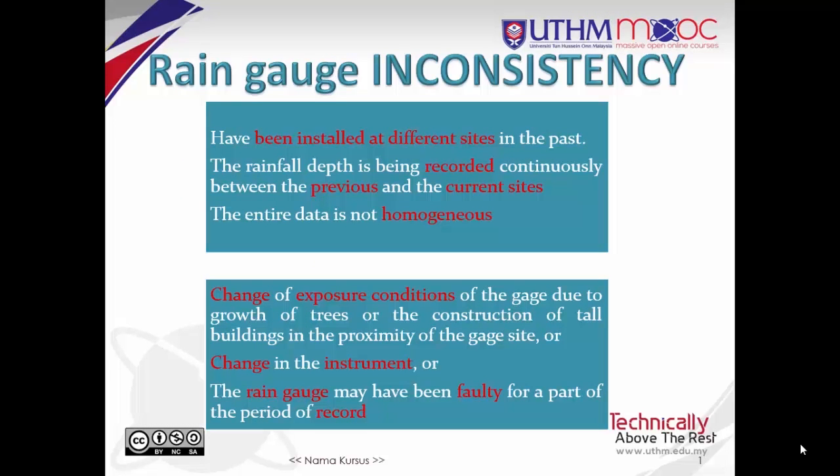Estimating missing data is one problem that hydrologists need to address. A second problem occurs when the catch at rain gauges is inconsistent over a period of time. An adjustment of the measured data is necessary to provide a consistent record.